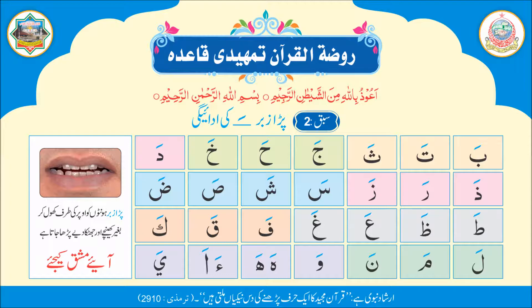لا، ما، نا۔ واو زبر — وا۔ ہا زبر — ہا۔ حا زبر — حا۔ ہمزہ زبر — اَ۔ یا زبر — یا۔ وا، ہا، حا، اَ، اَ، یا۔ با، تا، ثا، جا، حا، خا، ہا۔